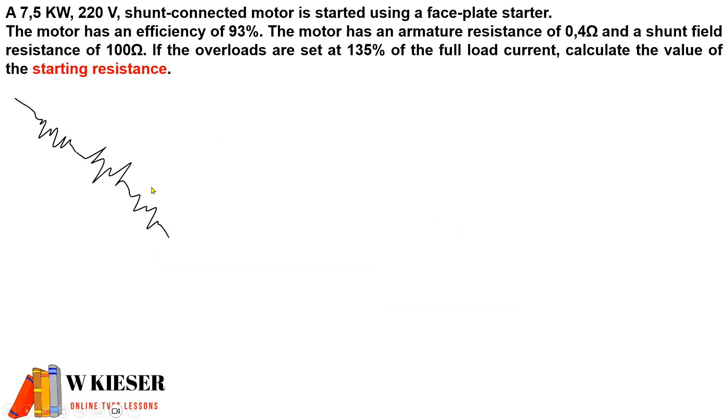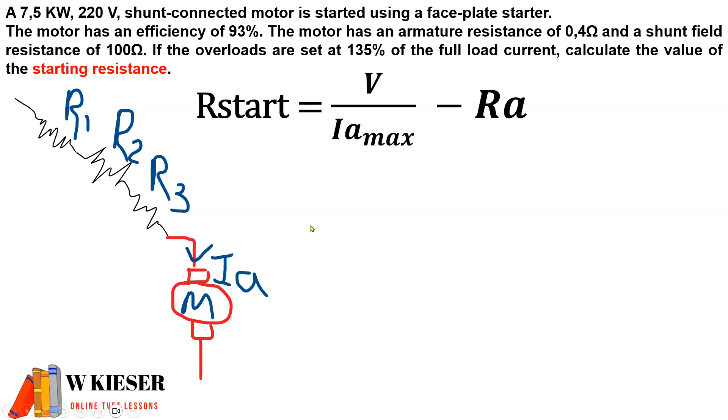Let's simplify this by drawing our three resistors that we need to calculate, connected in series to the motor armature assembly. The formula we're using to calculate the resistance start will be the terminal voltage divided by Ia max, which includes the overload set, minus the armature resistance. We want to disregard this armature resistance in order to calculate the three resistors in series.